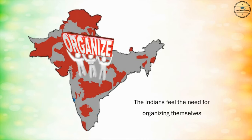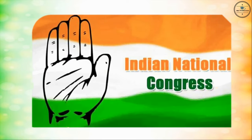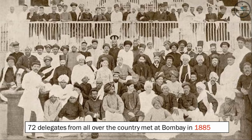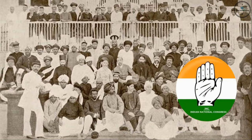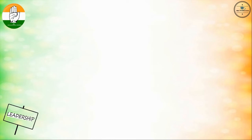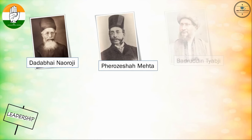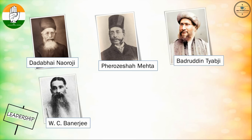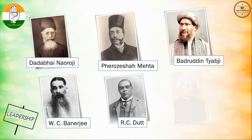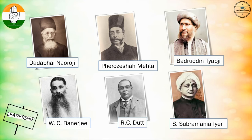The Indians felt the need for organizing themselves. 72 delegates from all over the country met at Bombay in 1885 and formed an association known as the Indian National Congress. The founder leaders of the Indian National Congress were Dada Bhai Naoroji, Feroz Shah Mehta, Badrudeen Tyabji, W.C. Banerji, R.C. Dutt, and S. Subramanya Iyer.